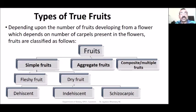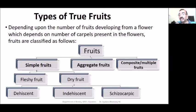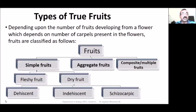The simple fruit is again divided into two types: fleshy fruit and dry fruit. Dry fruit: at maturation, the pericarp dries up. Fleshy fruit will not dry up. Dry fruits are of three types: dehiscent, indehiscent, and schizocarpic. So the overall classification: simple fruit, aggregate fruit, composite. Simple is divided into fleshy and dry. Dry is again divided into dehiscent, indehiscent, and schizocarpic.